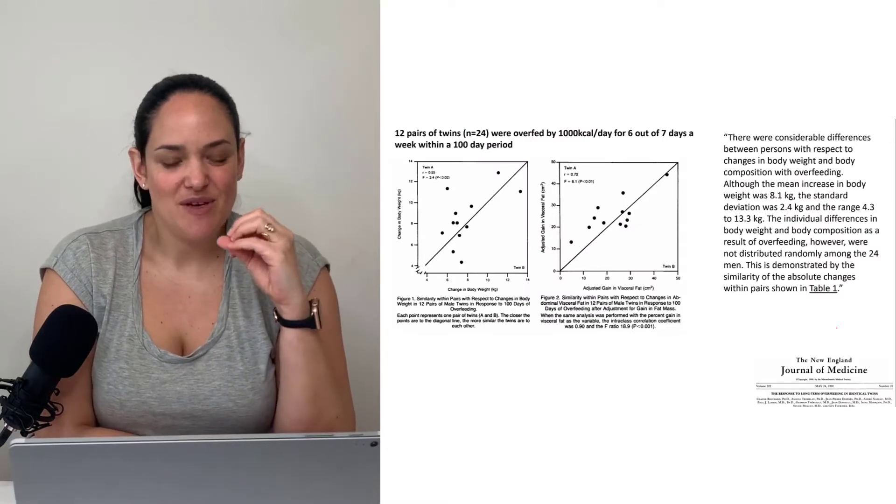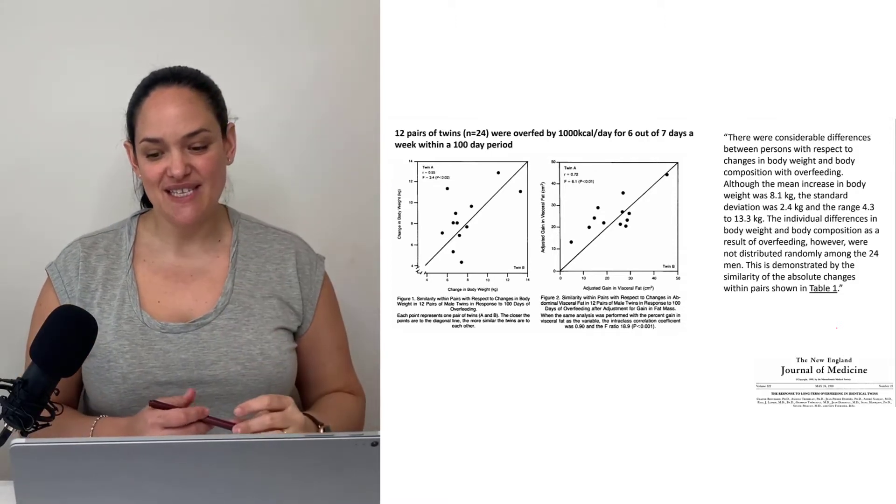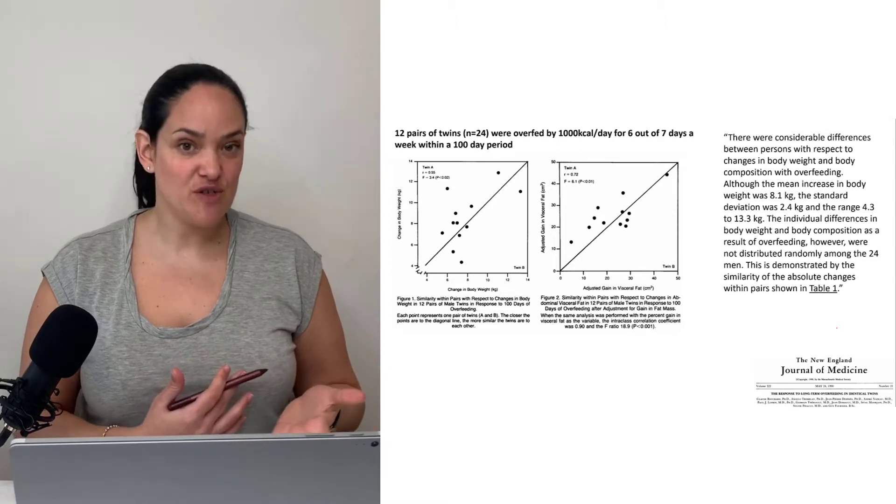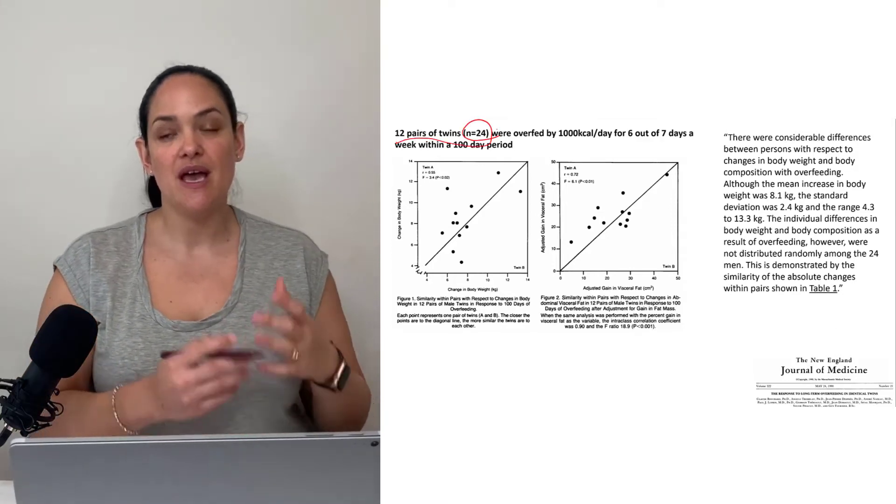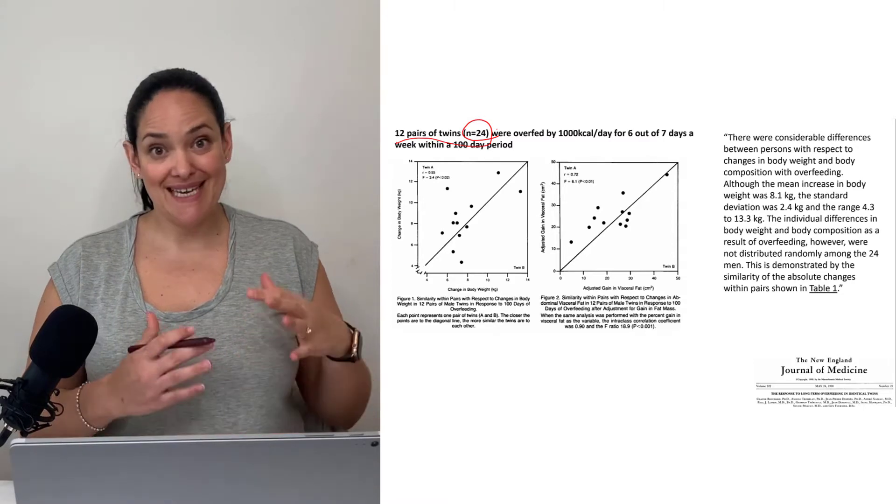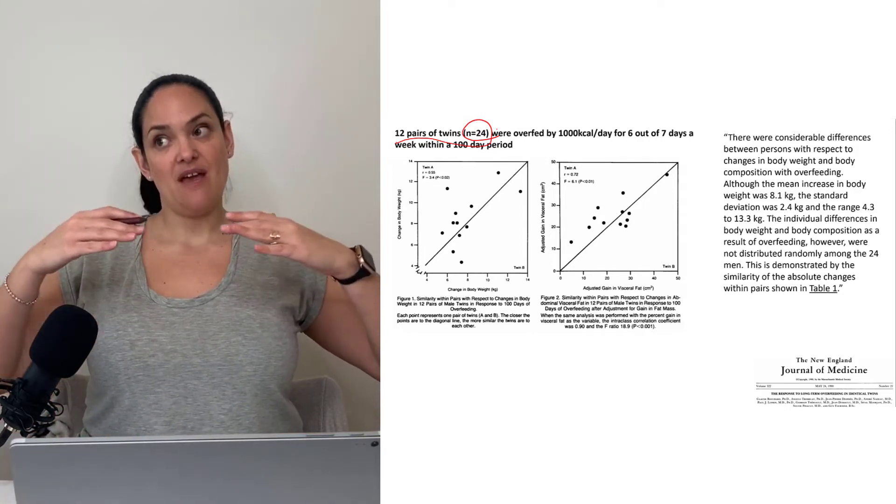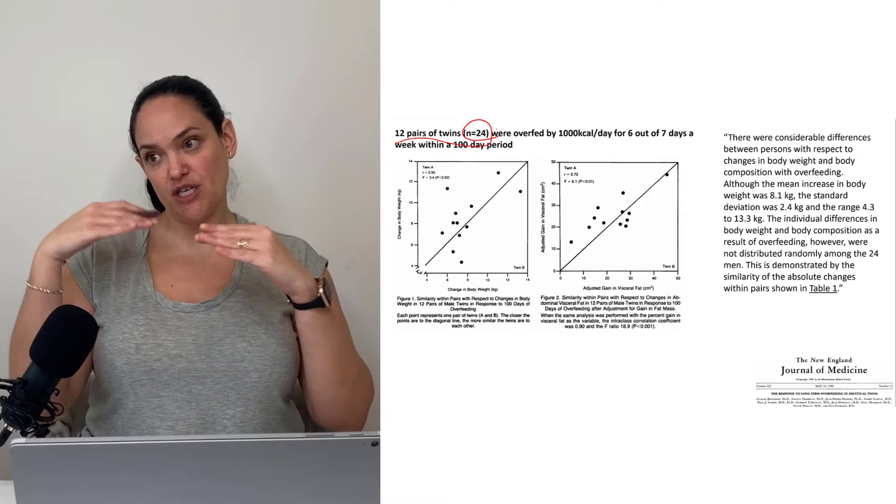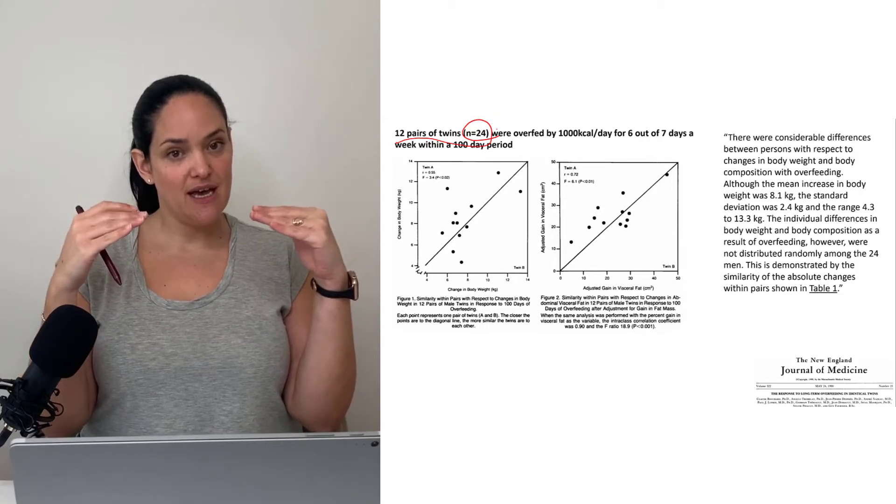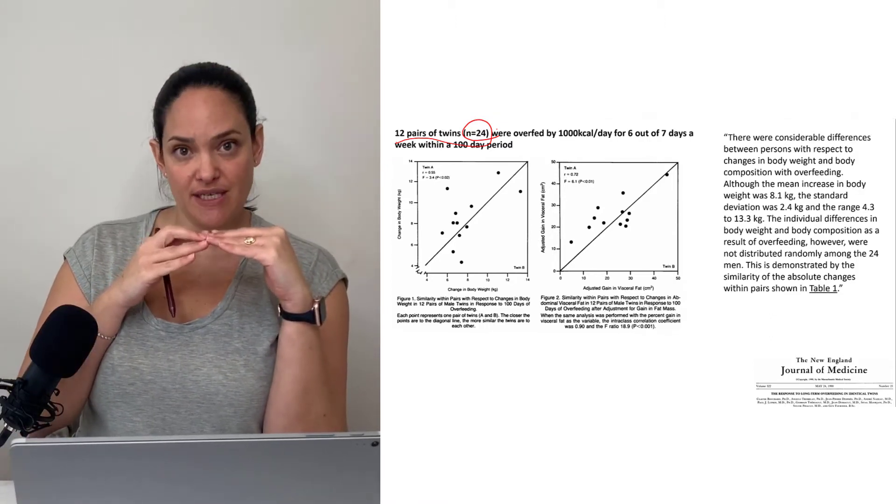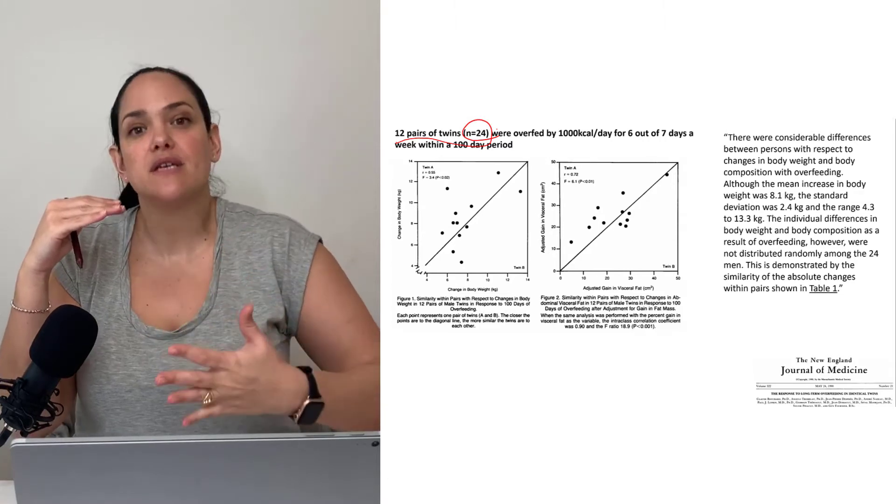Another study that was pretty seminal is this paper out of Laval University in Quebec, Canada. They took 12 pairs of identical twins, 24 people total, and housed them at the university for about 100 days. Before they came, they found out approximately how much each person ate regularly by having them record their diet, and then they added 1,000 calories to each person's regular intake.